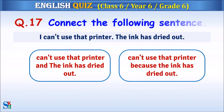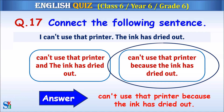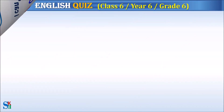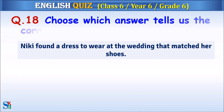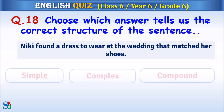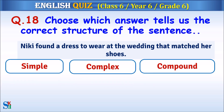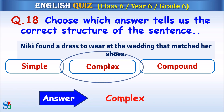Question 17: Correct the following sentence. The answer is: 'Can't use that printer because the ink has dried out.' Question 18: Choose which answer tells us the correct structure of the sentence. The answer is 'complex.'